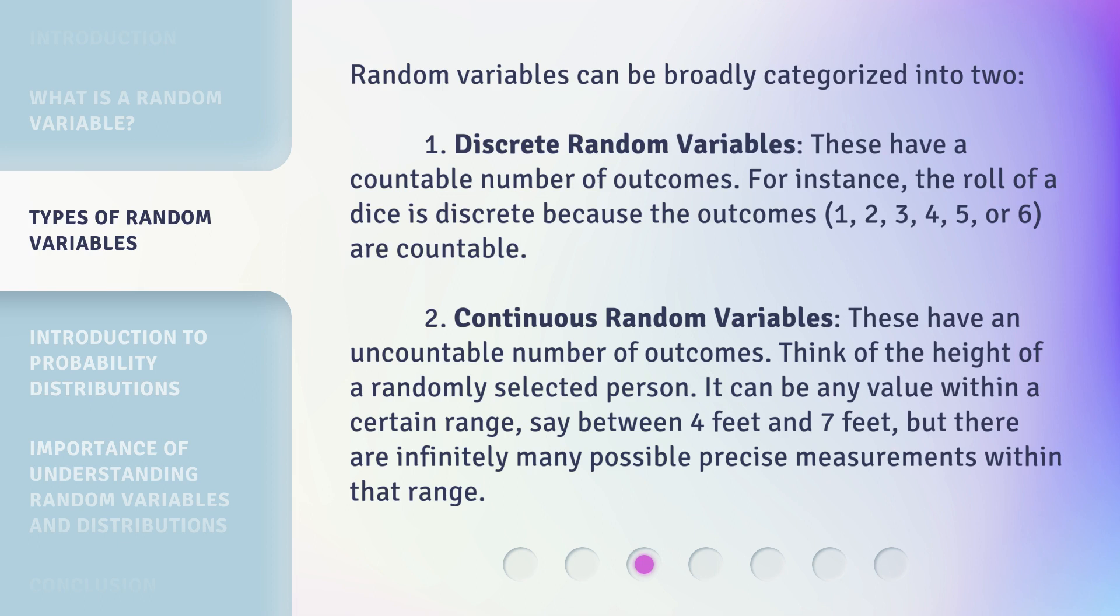2. Continuous Random Variables. These have an uncountable number of outcomes. Think of the height of a randomly selected person. It can be any value within a certain range, say between 4 feet and 7 feet, but there are infinitely many possible precise measurements within that range.